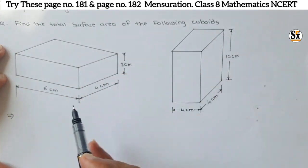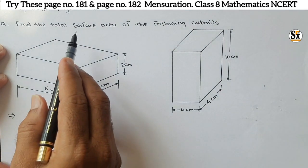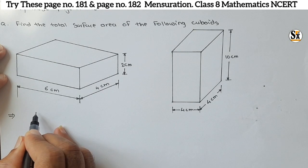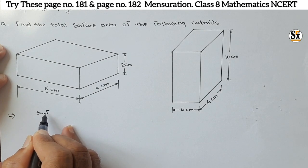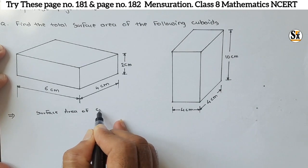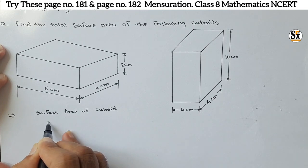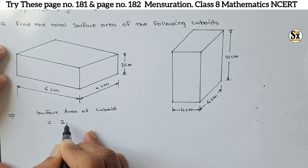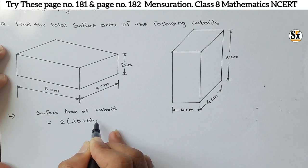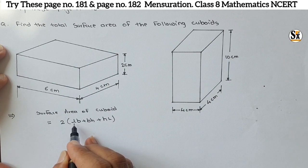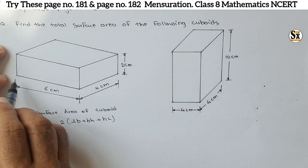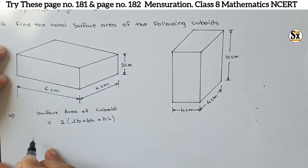We have to calculate the surface area of cuboids. The formula for surface area of a cuboid is 2 into bracket lb plus bh plus hl, where l is length, b is breadth, and h is height. Just put the values in.